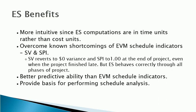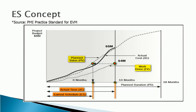Earned Schedule provides the basis for performing schedule analysis. Earned Schedule can be described as the value of the time increment where the earned value at the status date should have been accrued. As seen in this graph, Earned Schedule is determined by projecting earned value at the status date — which is actual time, 8 or 10 months in the graph — onto the Planned Value (PV) curve. The time associated with this projection on the PV curve is the Earned Schedule (ES).